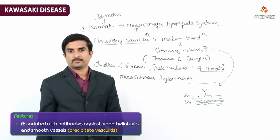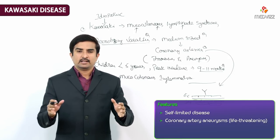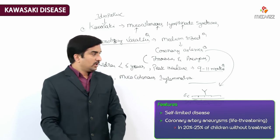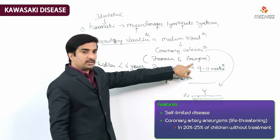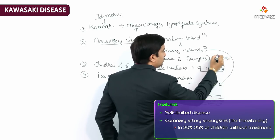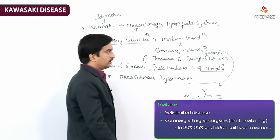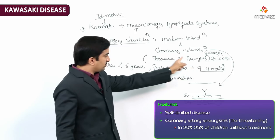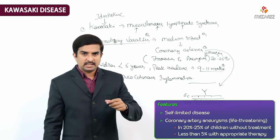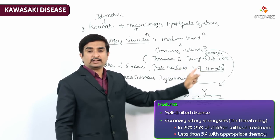Even though Kawasaki disease is usually self-limited, potentially life-threatening coronary artery aneurysms may develop in 20 to 25 percent of children without treatment. With appropriate therapy, this falls to less than five percent. This is why identification and diagnosis of the disease is extremely important to prevent the development of coronary artery aneurysm, which is the leading cause of death in this disease.